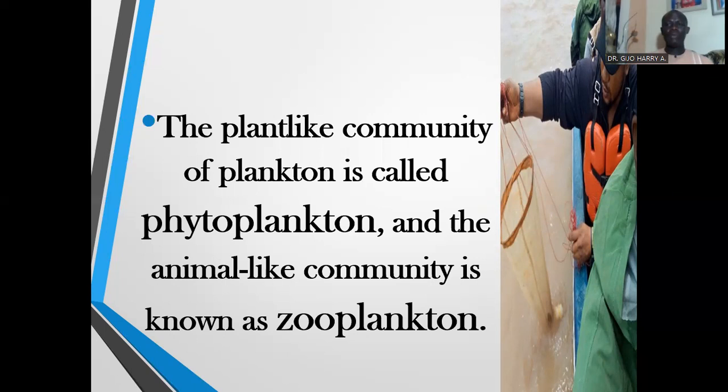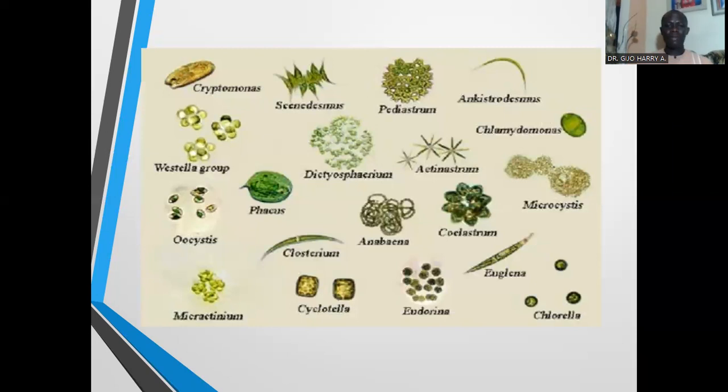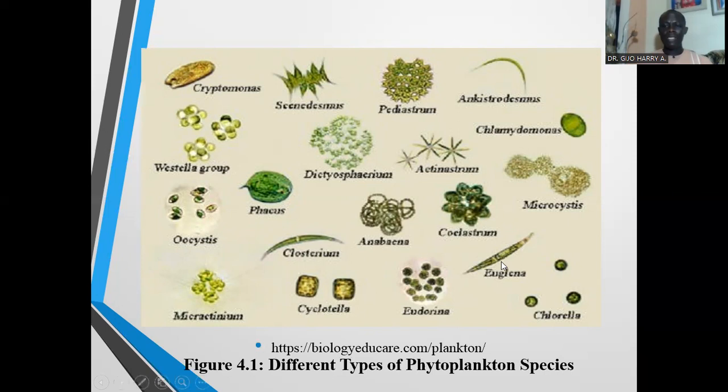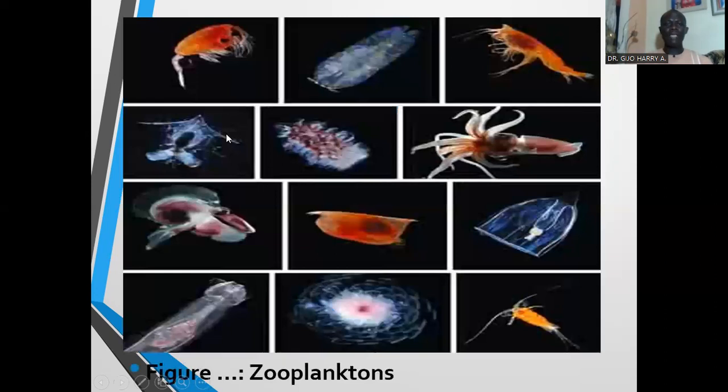The animal-like zooplankton includes the larvae and pupae of minute animals. These are pictures of the plant-like planktons called phytoplankton. They include the euglena, which is microscopic and belongs to the sub-phylum Protozoa. We also have other organisms like the chlorella, the eudorina, and many others. These are typical examples of the phytoplankton.